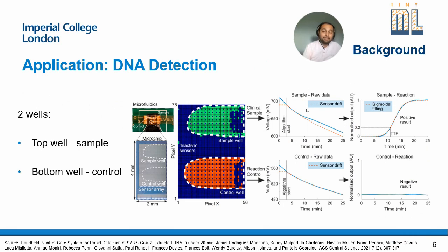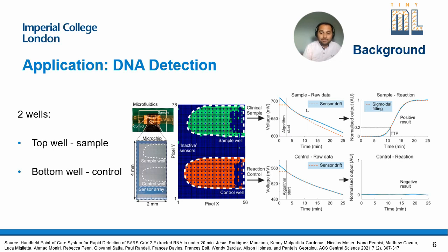That brings us to an application: DNA detection. We can use ISFETs to detect certain diseases — we have proven this technology for COVID-19. The chip sits under a microfluidic chamber with two wells: a sample well and a control well. A positive result shows an inflection point in the output, presenting as a sigmoid, whereas a negative result shows no inflection point. Previous works have focused on signal processing methods to identify this inflection point as an amplification event, but these circuit techniques have not provided adequate results.